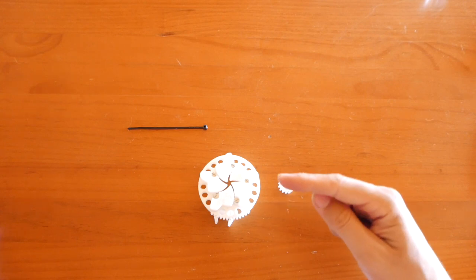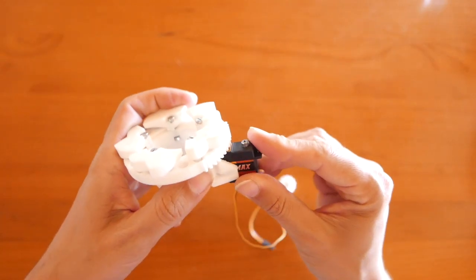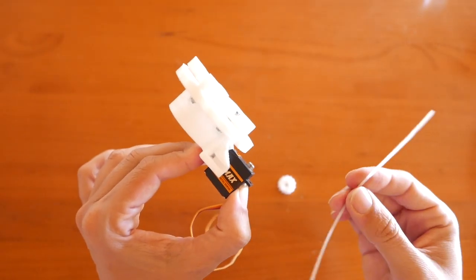Once the shutter is assembled, comes the part of fixing the servo. We will place it here. So we will take the zip tie and we will go through the hole.